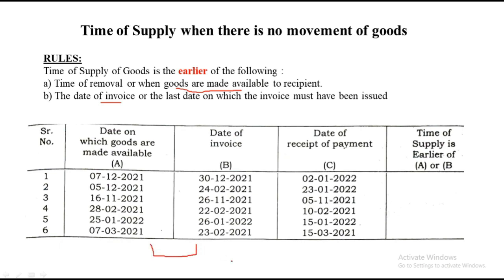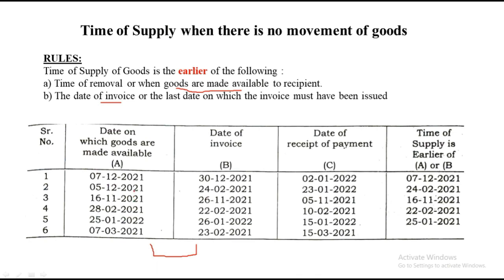This chapter doesn't have any calculation; you just have to identify the date. So 7th December and 30th December — whichever is earlier is your time of supply, so 7th December is the answer for the first example. In the second, compare only the first and second column: 5th December and 24th February — February comes before December, so 24th Feb 2021 is the answer. 16th November and 26th November — 16th is earlier, so 16th November. 20th February and 22nd February — 20th is earlier. 15th Jan 2022 and 26th Jan — 15th is earlier, so 25th Jan. And 7th March and 23rd February — February comes earlier, so 23rd Feb 2021.